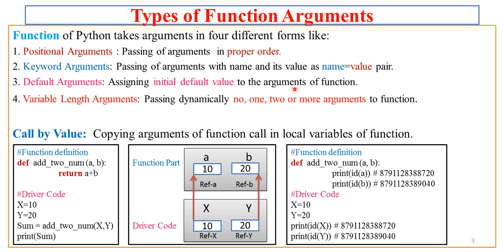This is just a one-line description to understand the distinction among these four types. The actual implementation will be seen in subsequent slides. Variable length arguments involve passing dynamically — no argument, one argument, two arguments, or more arguments to a function. We will see this at length in subsequent slides or perhaps in the next lecture.